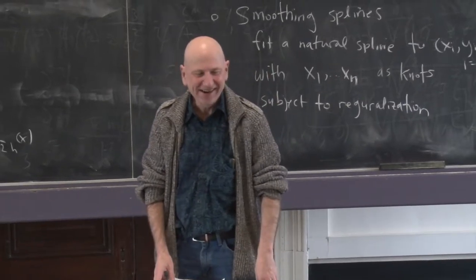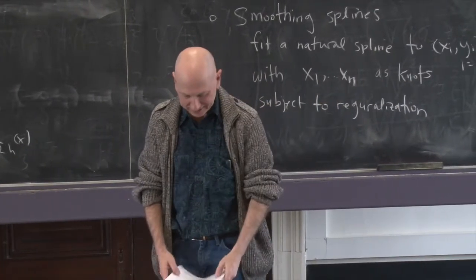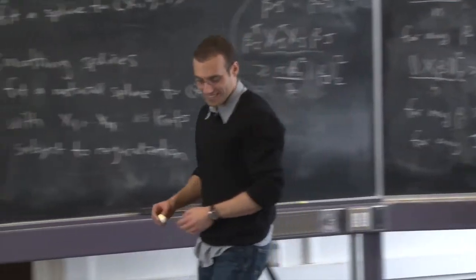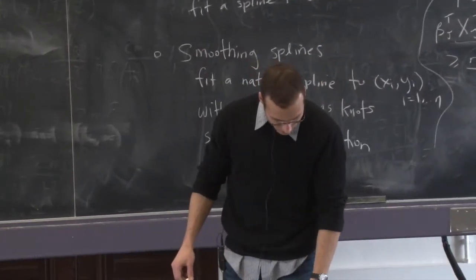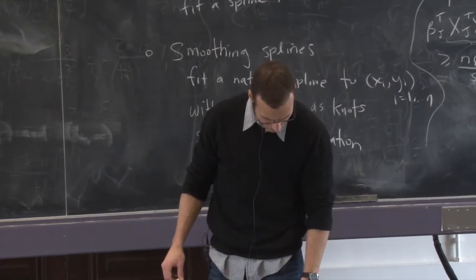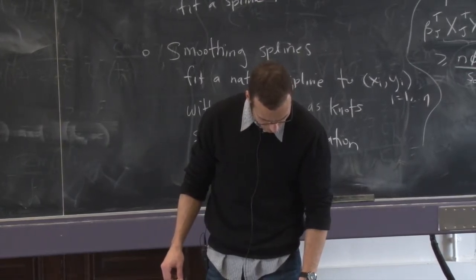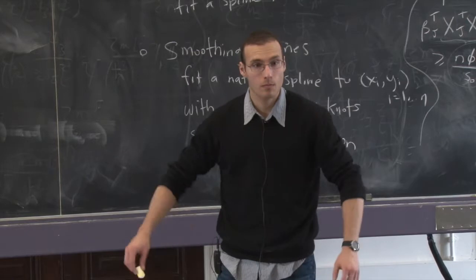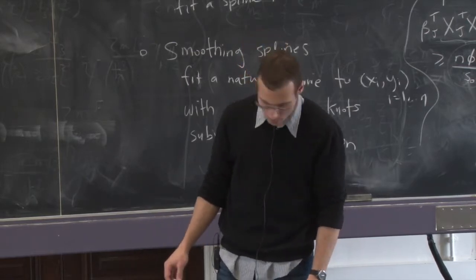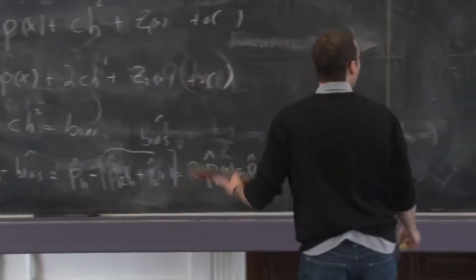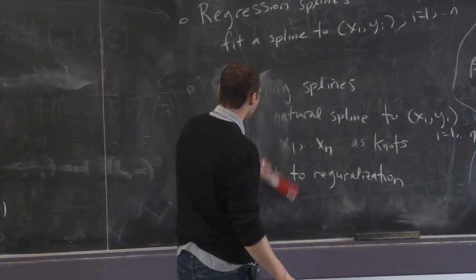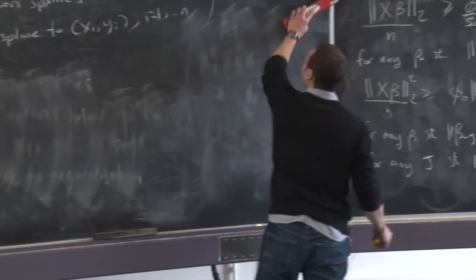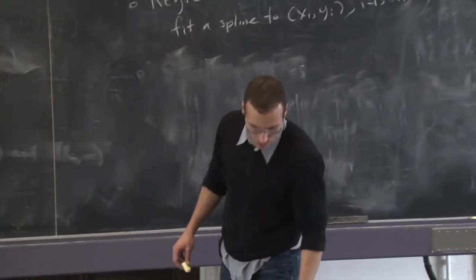I want to ask something about degrees of freedom. In the practice midterm, there was a question about what other regression estimate matches the degrees of freedom of the lasso. Can you explain how to compute the degrees of freedom for regression? Sure, let's just work through Problem 4.